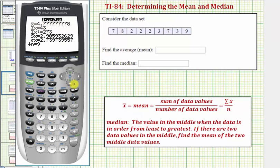To find the median, we have to arrow down. MED stands for median, so the median is three. Our median is three and the mean is approximately 4.78.